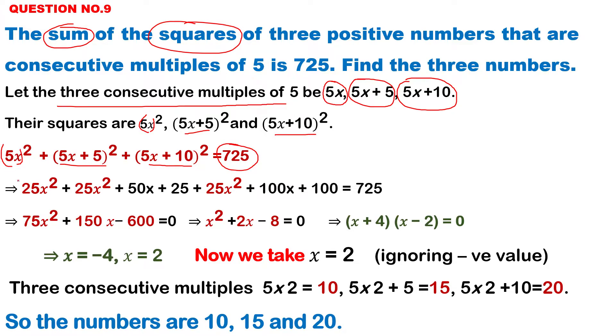So now do the square. 5, 5, 25. a plus b whole square: 25x square plus 50x plus 25. 5x plus 10 whole square: 25x square, 100x, then 100.